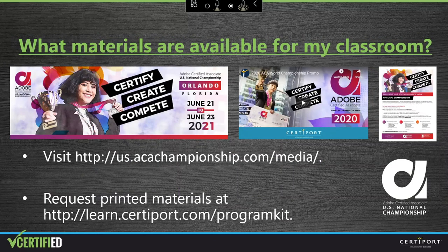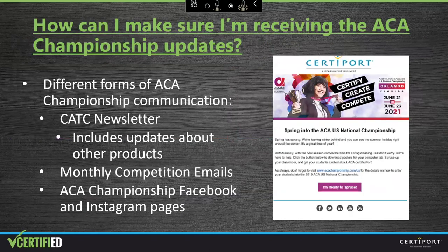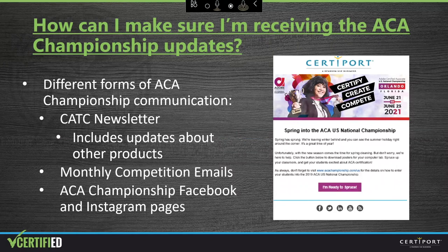I hope you have a better understanding of the Adobe Certified Associate Championship — who can qualify, how students can enter, the deadline, and what students can win. Promoting this event in your classroom is just as easy as promoting the MOS Championship. A number of assets can be downloaded by visiting us.acachampionship.com/media. We're currently preparing the assets for next year's event, updated before the next school year begins in August. You can also request classroom materials by visiting learn.certiport.com/programkit. We prepare monthly competition emails and share resources and giveaways for educators. We also have an Adobe Certified Associate Championship Facebook and Instagram page where we're constantly posting updates, and we'd love for you to follow those pages.